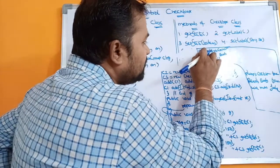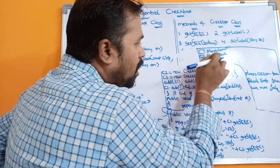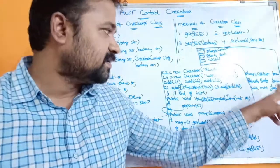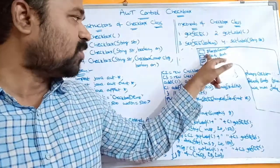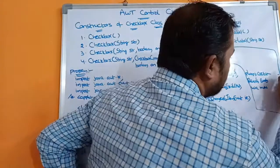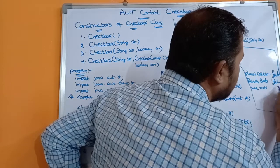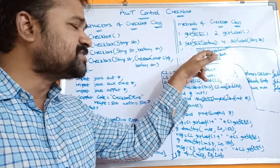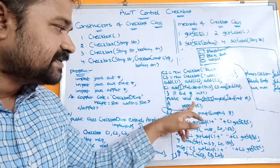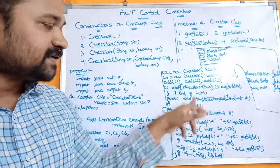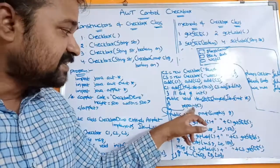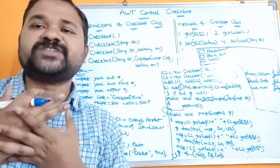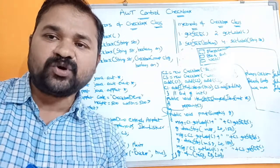Let us assume that we click on the first checkbox so it goes from on to off, and also click on the second checkbox so it goes from on to off. Then all three checkboxes have no tick mark, so the output will be: 'playing cricket false', 'reading books false', 'watching movies false.' Whenever we click on a checkbox, itemStateChanged() is called, repaint() is called, control goes to paint, and we get the corresponding output. This is about checkbox control. In the next video we will discuss about checkbox group control.